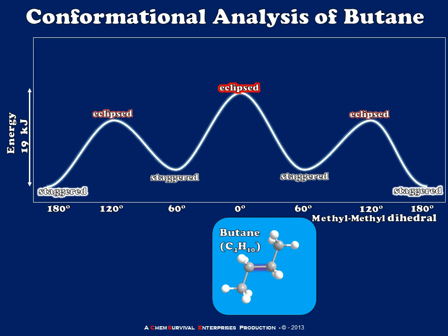And yet somewhat different, because if you look closely you'll notice that not all of the staggered conformers have the same energy. Nor do all of the eclipsed conformers have the same energy. So there's something more going on here in butane than there was in ethane.